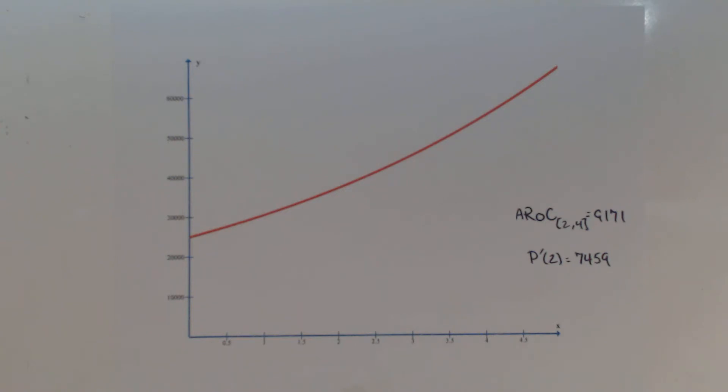So parts E and F for activity 1.9 are about drawing the tangent and secant lines. First off, just as a reminder,